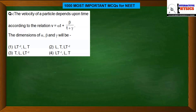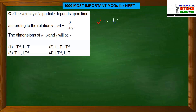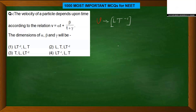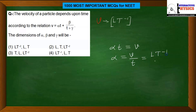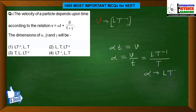The velocity v of a particle depends upon time t. Here v is velocity, and the dimensional formula of velocity is LT⁻¹. From the homogeneity principle, we know that in any equation we can only add quantities of the same dimension. So the dimensional formula of alpha*t must equal that of v. Therefore, alpha = v/t = LT⁻¹/T = LT⁻².